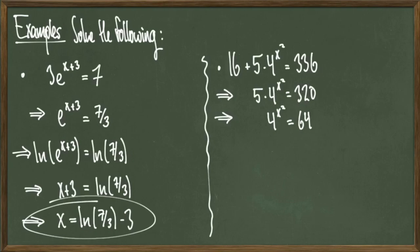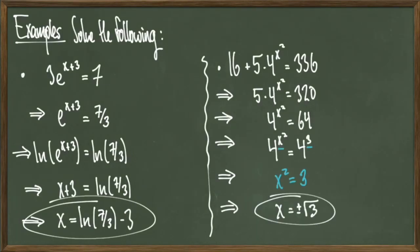Now, since 64 is equal to 4 to the fourth, I can rewrite the equation as 4 to the x squared equals 4 to the third. And since I have like bases, I can set x squared equal to 3, which means that x is equal to plus or minus square root of 3.